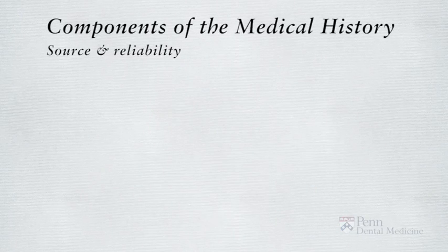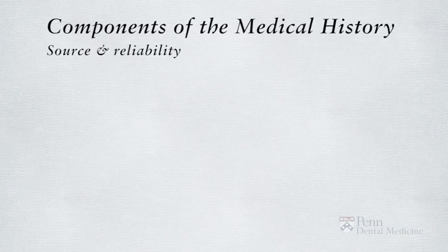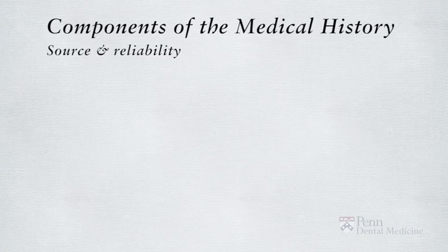The first part is the components of the medical history. These include understanding the source and the reliability of the patient. The source of the medical history — did it come from other medical charts, another physician, dentist, or clinician? Reliability refers to whether the patient is a reliable historian, as some patients have trouble remembering. You need to assess reliability and list all sources of the medical history.